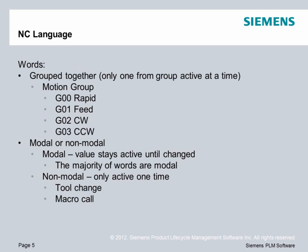As we look at the NC language, we can see that words are grouped together, and really only one word from that group can be active at any time. For example, it's impossible for the machine to be moving at feed rate mode and rapid at the same time, so they are part of the same group. Also in that group is clockwise motion and counterclockwise motion. Another special thing about the NC language is words are either modal or non-modal. A modal word means the value stays in effect until it is changed or replaced by another word of the same address.